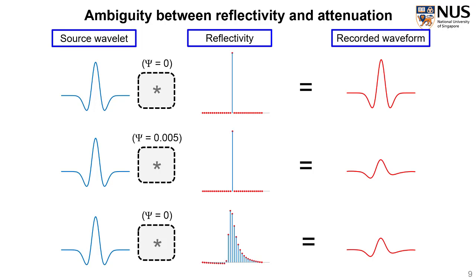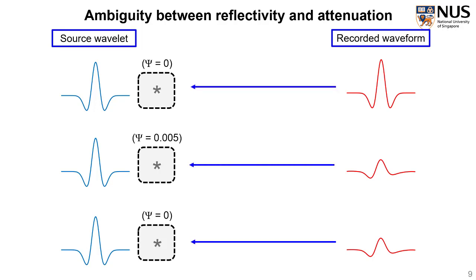You can imagine if we want to use the recorded waveform to compare with the source wavelet, try to estimate the attenuation, then we will get some ambiguity between the third and the second cases. In fact, the third case reflectivity, people may refer it as the scattering Q. The conventional Q estimation method basically is impossible to differentiate such scattering Q from the intrinsic Q.